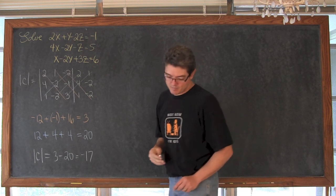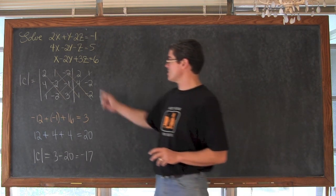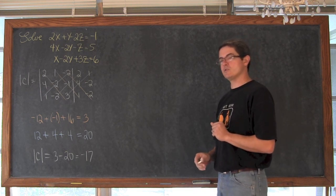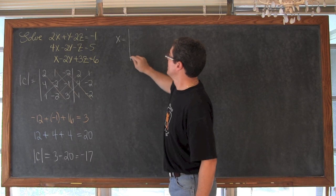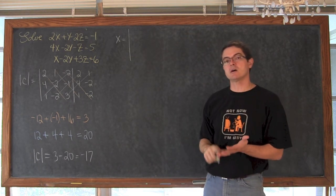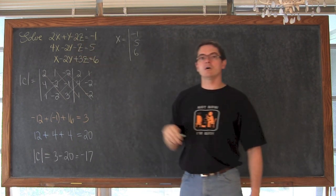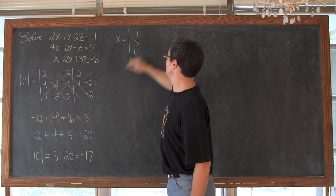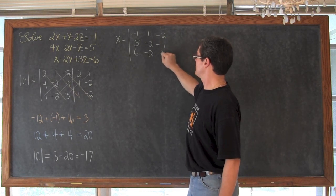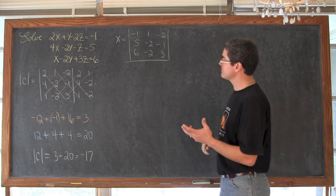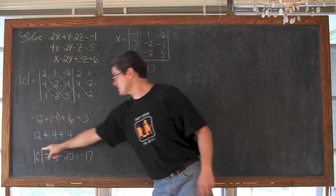Since I am talking and writing at the same time I want to make sure my answers are right. We have now found the determinant of C equals negative 17. Let's set up what we are going to do to solve for x. We took out the coefficients of x and plugged in the constant column — negative 1, 5, and 6 — in the first column. Then we keep all the other values from the original coefficient matrix: second column 1, negative 2, negative 2; third column negative 2, negative 1, 3. That determinant goes over negative 17.